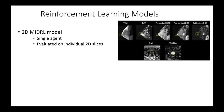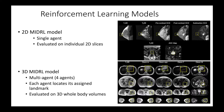In this paper, we evaluated two models. The first model was a 2D single agent model evaluated on individual 2D slices. The second model was a 3D multi-agent model with four agents, each agent locating its assigned landmark. The 3D model was evaluated on 3D whole body volumes. The upper figure on the right-hand side of the slide shows breast and prostate images used in evaluating the 2D model, and the bottom figure shows whole body images used in evaluating both the 2D and 3D models.